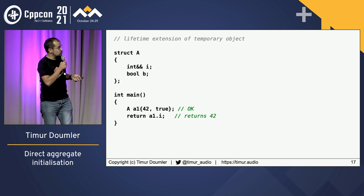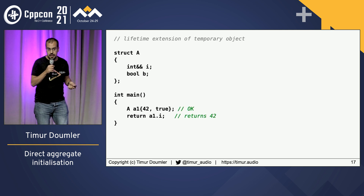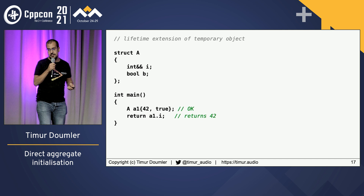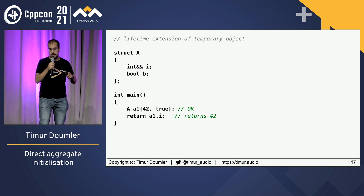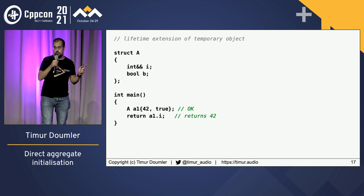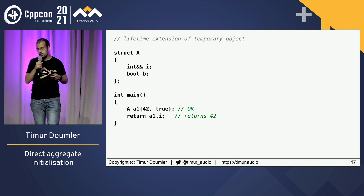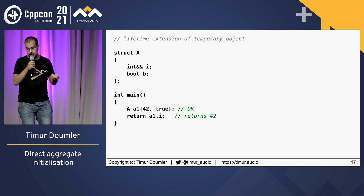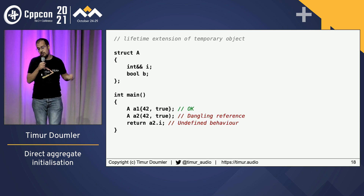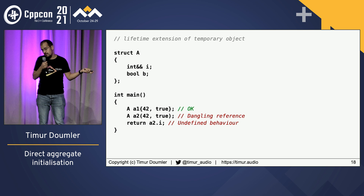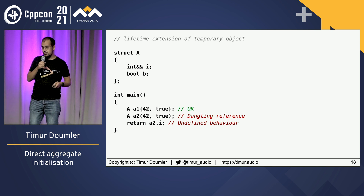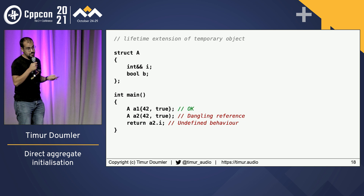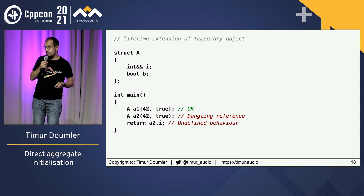The next one is lifetime extension of references. If you have a reference member, what list initialization is going to do — if you do aggregate initialization via list initialization — it's going to actually extend the lifetime of the reference if you initialize it with a temporary, so that works. But if you do it with parens, it's not going to do that, because direct initialization does not extend the lifetime of a reference. So you're going to get a dangling reference and undefined behavior, and that is going to be very sad.